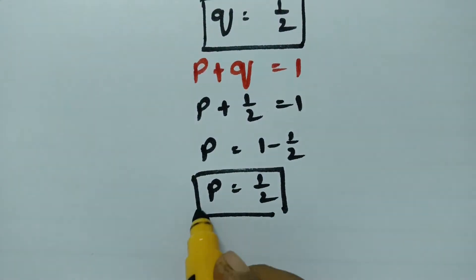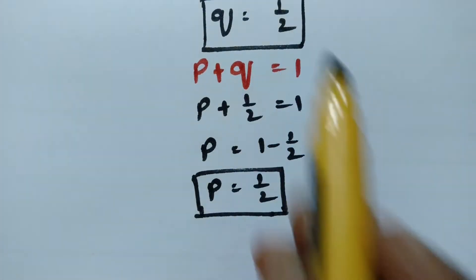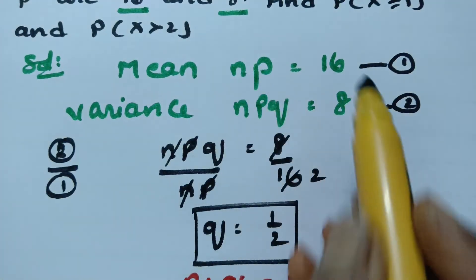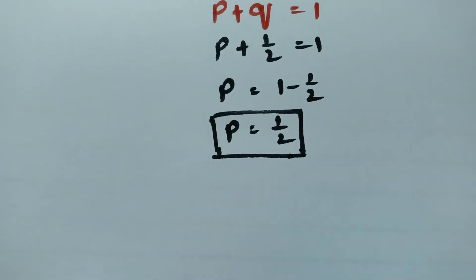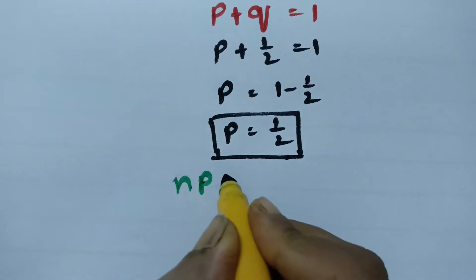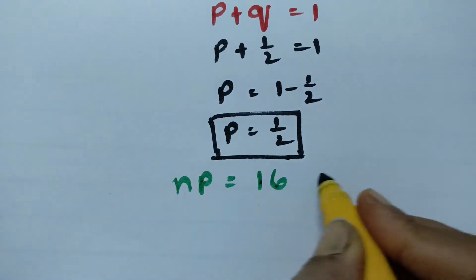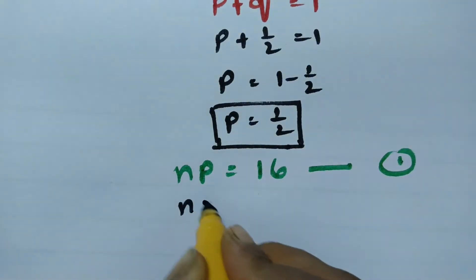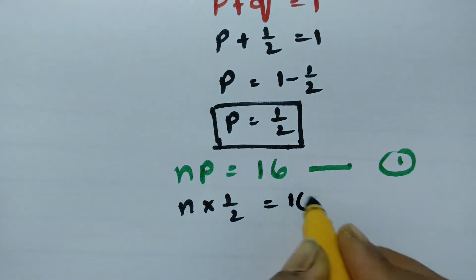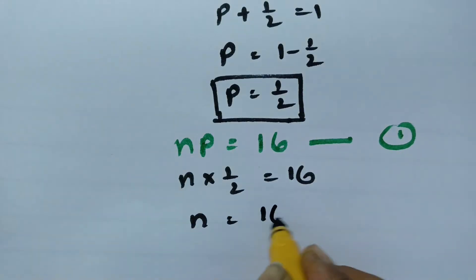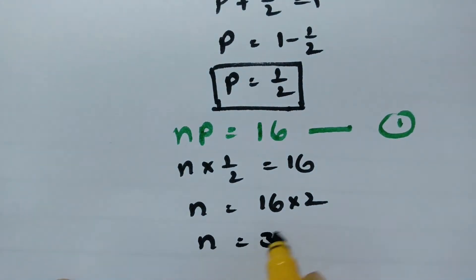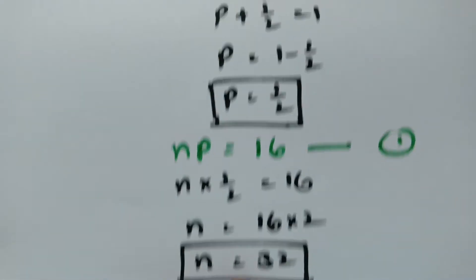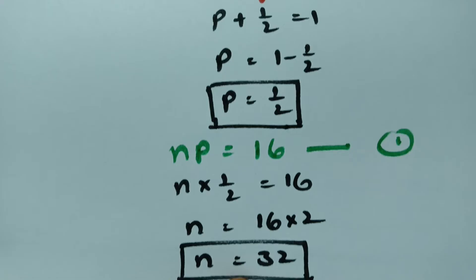So p equals one-half and q equals one-half. From equation 1, np equals 16. Substituting p as one-half: n times one-half equals 16, so n equals 16 times 2, giving n equal to 32. This is how we find the values of p, q, and n.